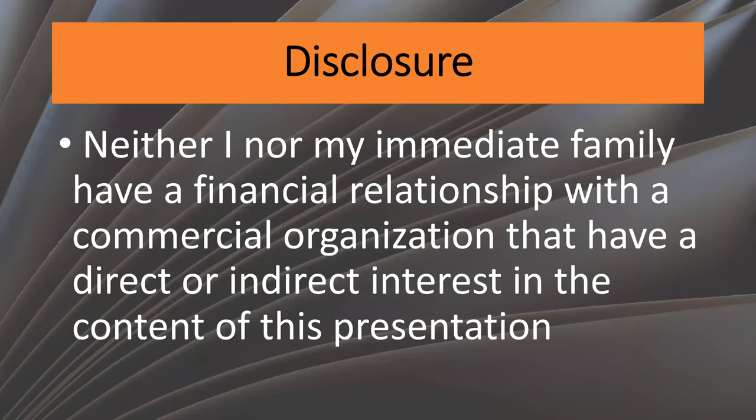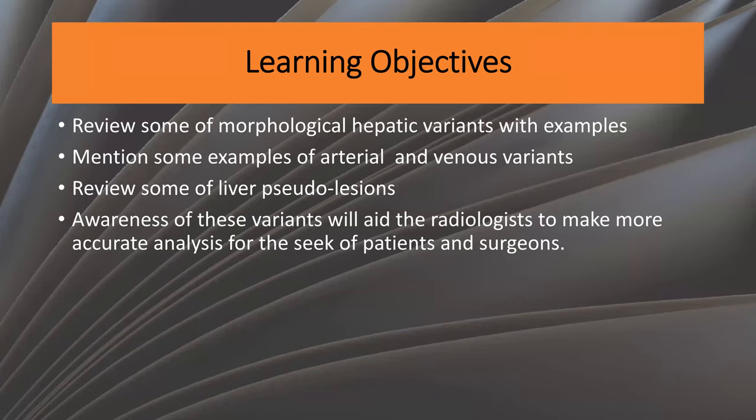My learning objectives are to review some of the morphologic hepatic variants of the liver, to review some of the arterial, venous, and biliary variants of the liver, and to review some of the liver pseudo-lesions. Awareness of these variants will aid the radiologist to make more accurate analysis for the sake of the patient and the surgeons.